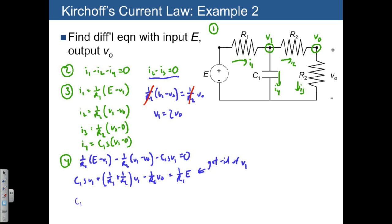That's just 2 times VO. Every time we see V1, we substitute 2 times VO, and we get this equation.